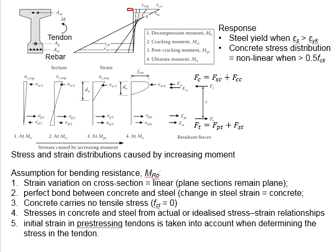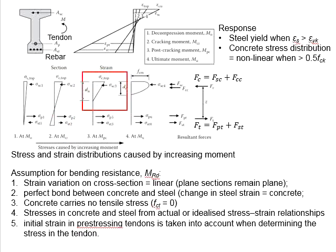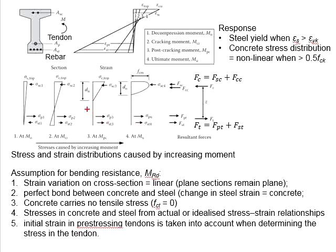That is why, in order to determine the strain of the tendons and reinforcement bar, we interpolate from the strain diagram. It is also assumed that the concrete carries no tensile stress after cracking. With that, only the stage before the cracking moment has tensile stress in the concrete. Starting from the post-cracking moment, there is no tensile stress in the concrete.